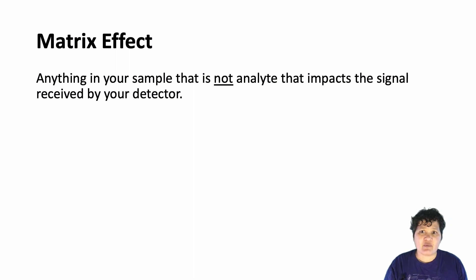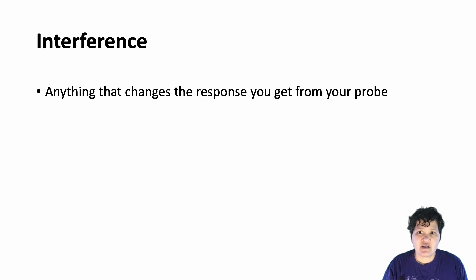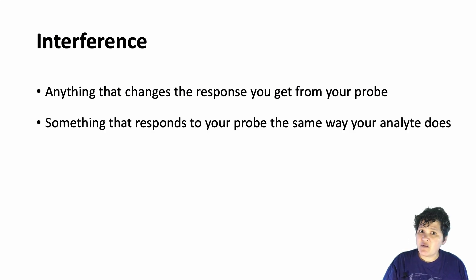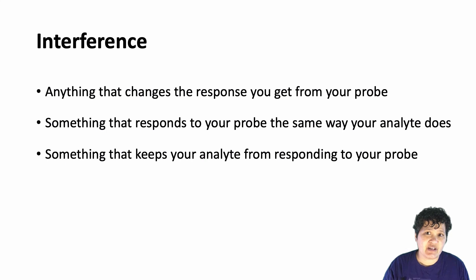So the substances that we find within our sample are things we call interferences. And interferences can fall into two categories. Some are going to be chemicals that respond to the probe the same way our analyte does, and others are chemicals that keep your analyte from responding in the way that you expect. And I'm going to have a lot to say about interferences and matrix effects in the future.